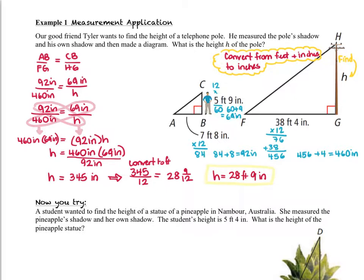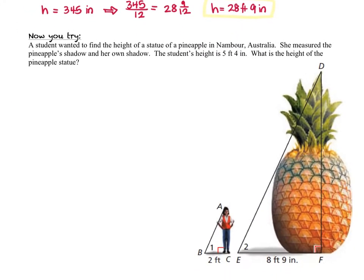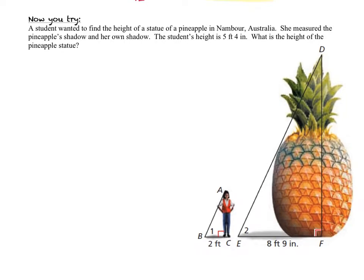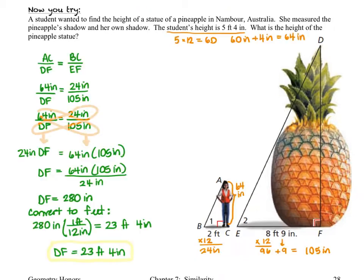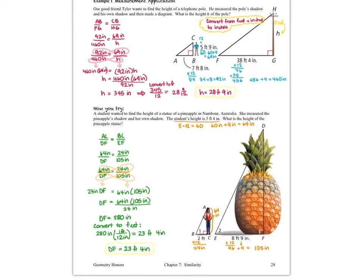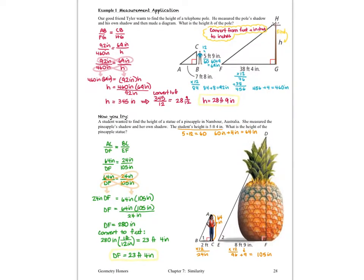Now we've got a Now You Try for you. Pause the video, work it through — remember to do your conversions first — then turn the video back on when you're ready to check your answers. Proportions are super handy in finding DF, the height of the pineapple statue. We use the student's height, the length of the pineapple's shadow, and the length of the student's shadow to create a proportion and find the missing value. This is all because of similar triangles.